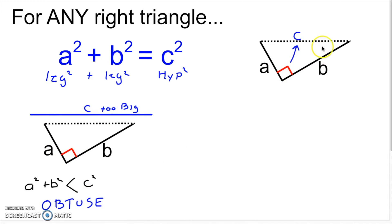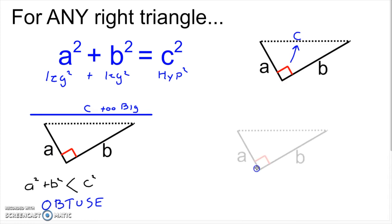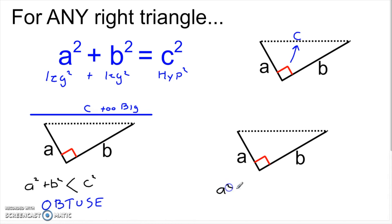Now, if a squared plus b squared equals c squared, I have a right triangle. Here we have a squared plus b squared is less than c squared, and I'm getting an obtuse triangle. So that should make you think — what happens if a squared plus b squared is not less than c squared, but is in fact greater than c squared?